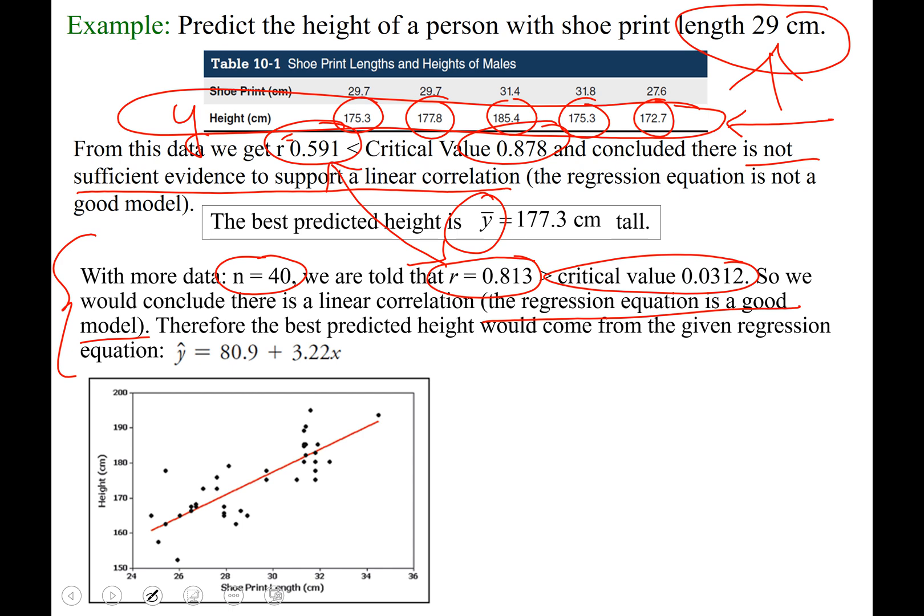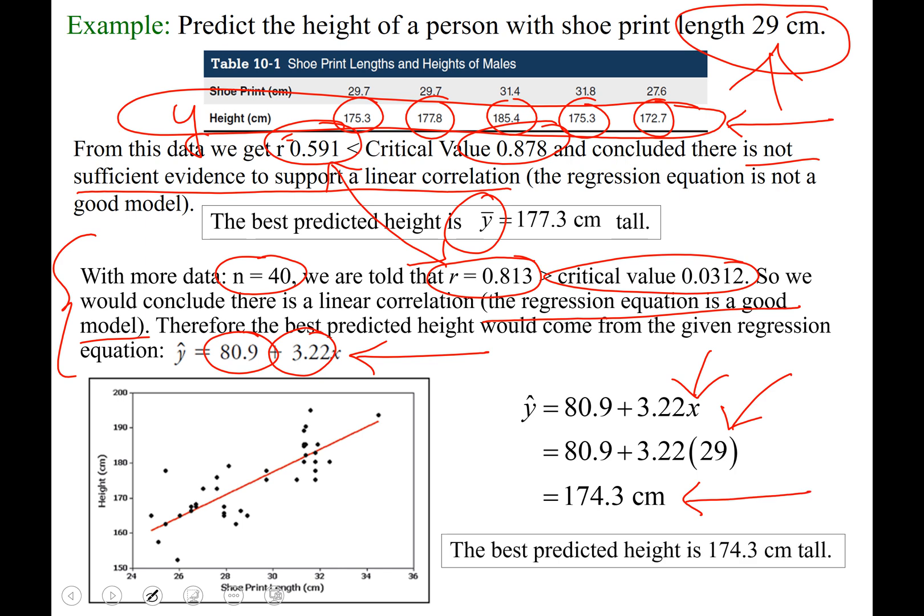We will take our output screen. If we scrolled down, we would have found a equals 80.9 and b equals 3.22. This is our regression equation that we would use for predictions. Now we take that 29 centimeters they're asking us to make a prediction for and plug it in for x. Substitute it in, type that in your calculator carefully, and you'll get 174.3 centimeters. Our prediction for a person with a shoe print length of 29 centimeters is that their height is 174.3 centimeters tall.